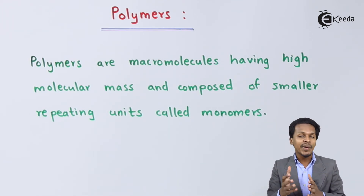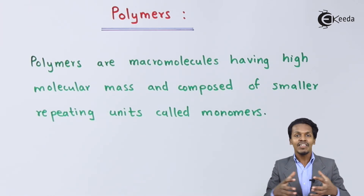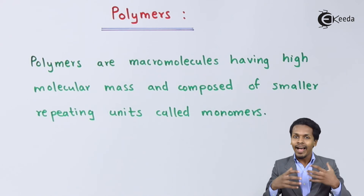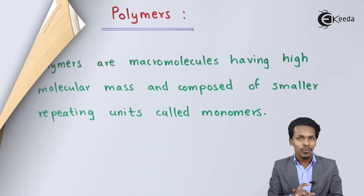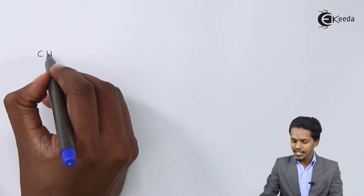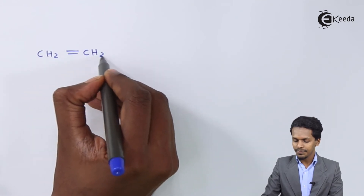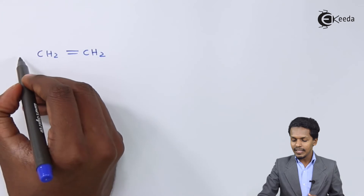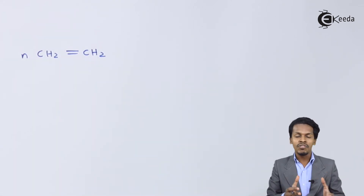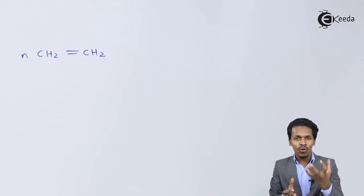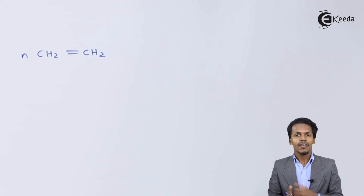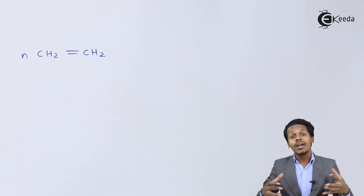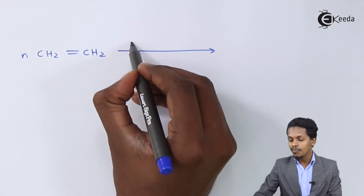Basically, a polymer is formed because of these small repeating units, which are known as monomers. Whenever these monomers combine with each other, they form a higher molecular mass compound — that is nothing but a macromolecule. If we consider an unsaturated compound, for example ethene — that is CH₂=CH₂ — and suppose we have n number of moles of ethene, these smaller molecules having lower molecular mass all combine with each other. This process is basically known as polymerization.